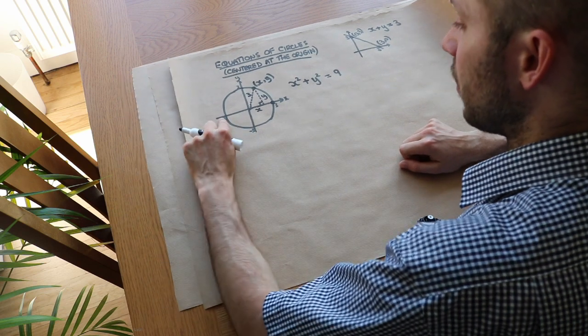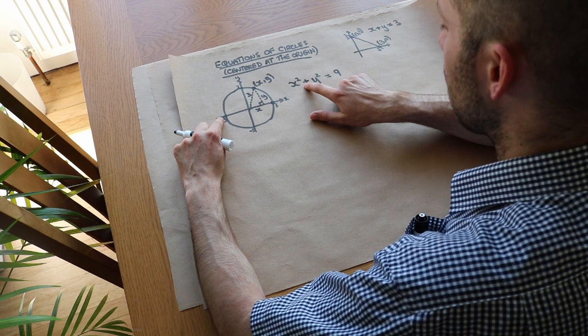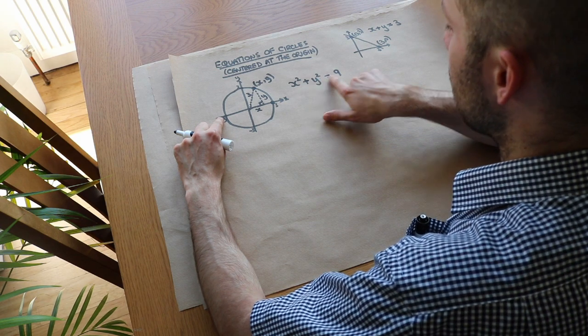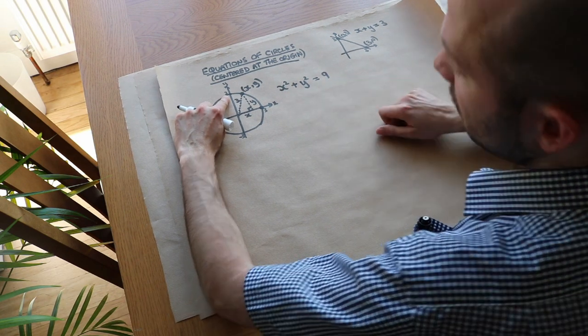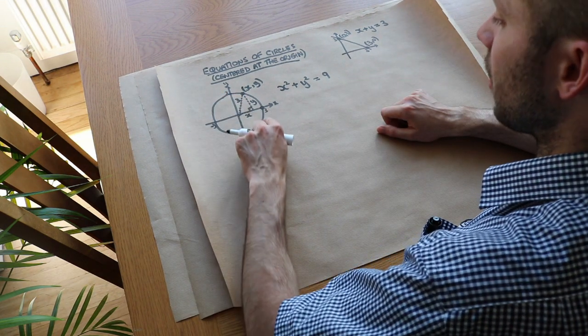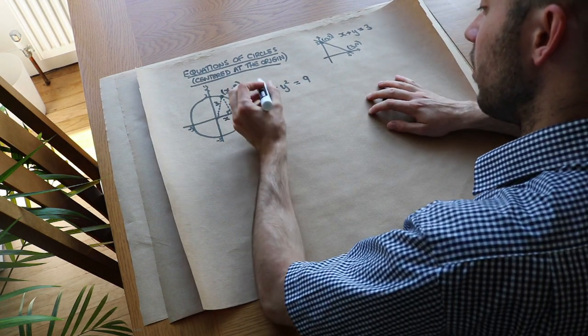What about if I chose this point on the circle here? Minus 3 squared is 9, plus the y-value, 0 squared, is 9. Or (0, 3): 0 squared plus 3 squared is 9. So it works. And whatever point I pick on the circle, because of Pythagoras theorem, it's going to obey this particular equation.